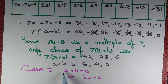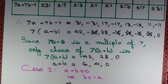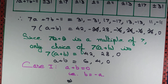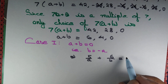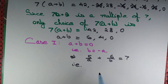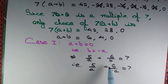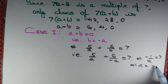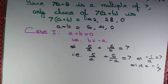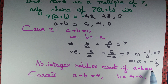Case 1: a + b = 0, so b = -a. Substituting into the original equation: 5/a + 6/(-a) = 7 gives (5 - 6)/a = -1/a = 7, so a = -1/7. This is not an integer, so no integer solution exists when a + b = 0.